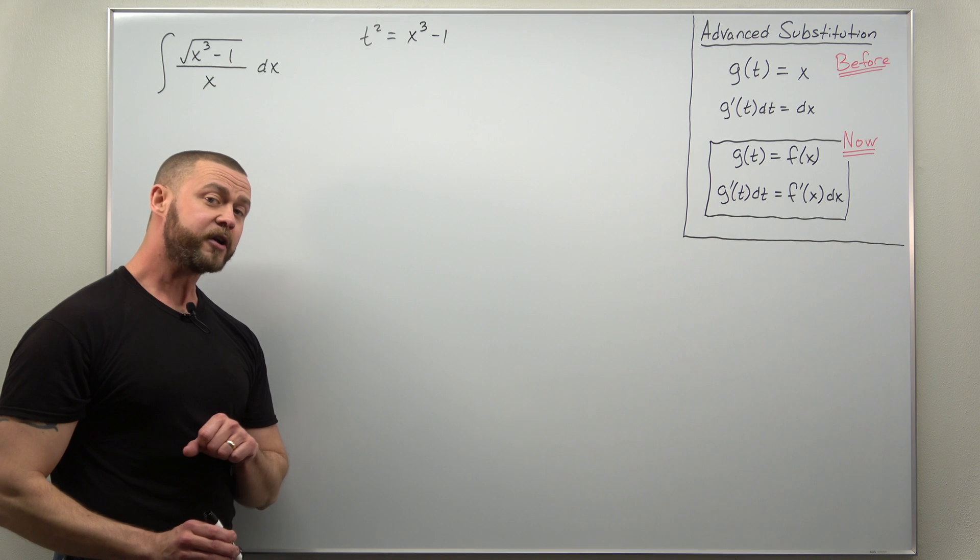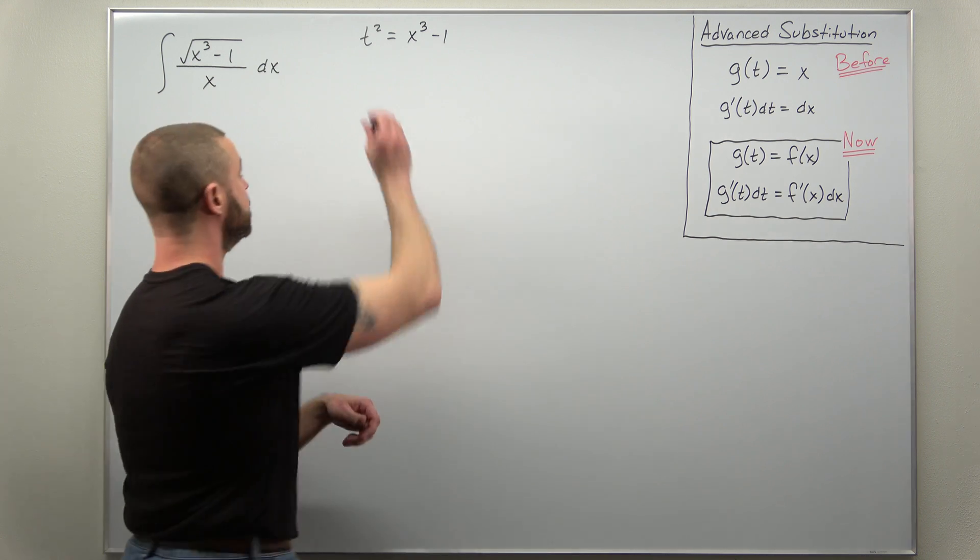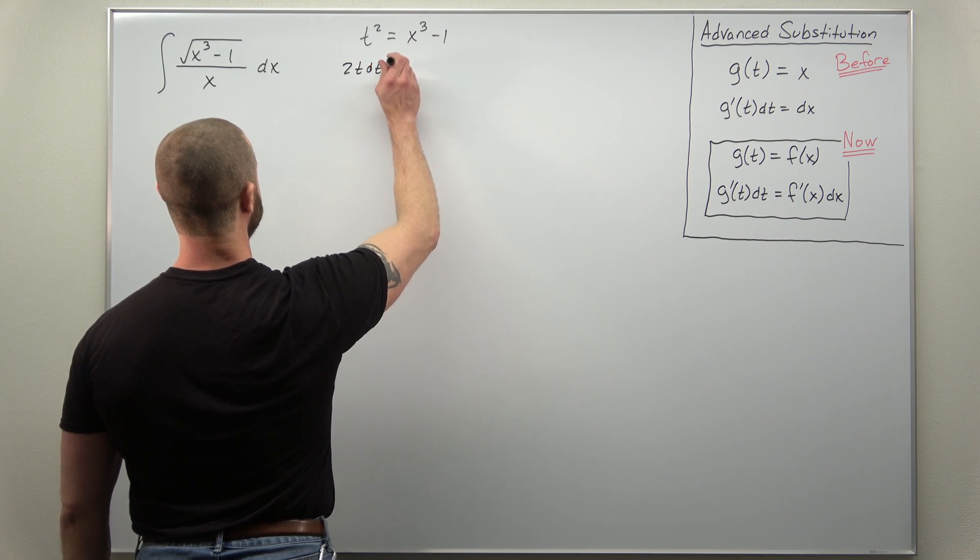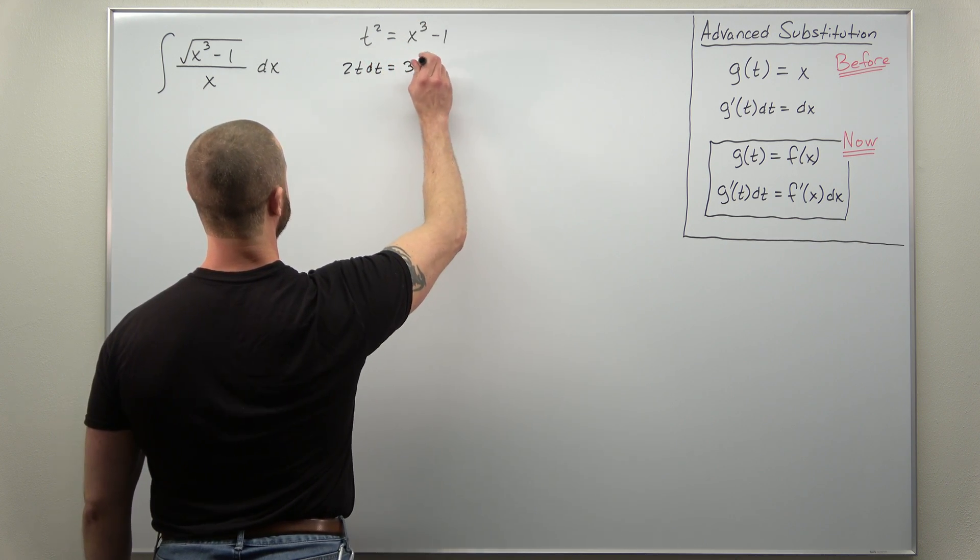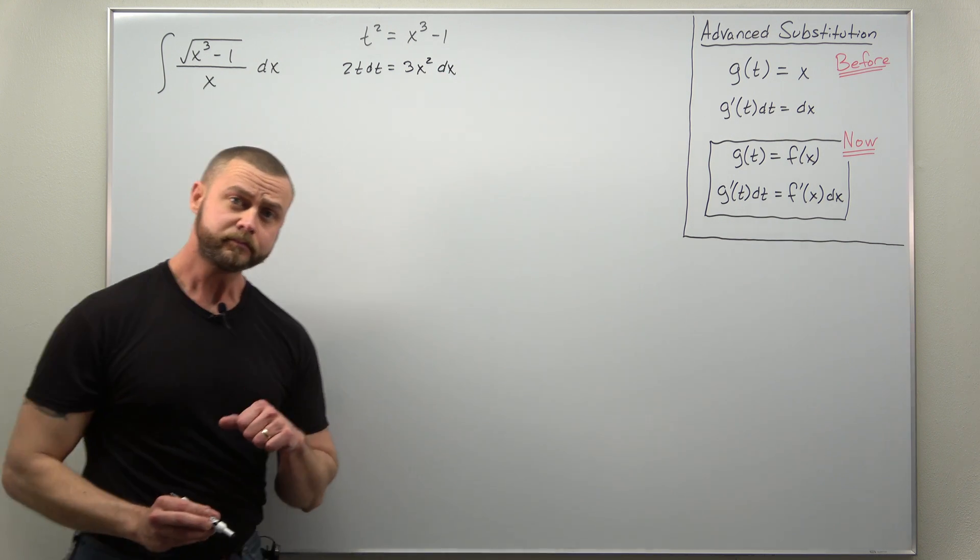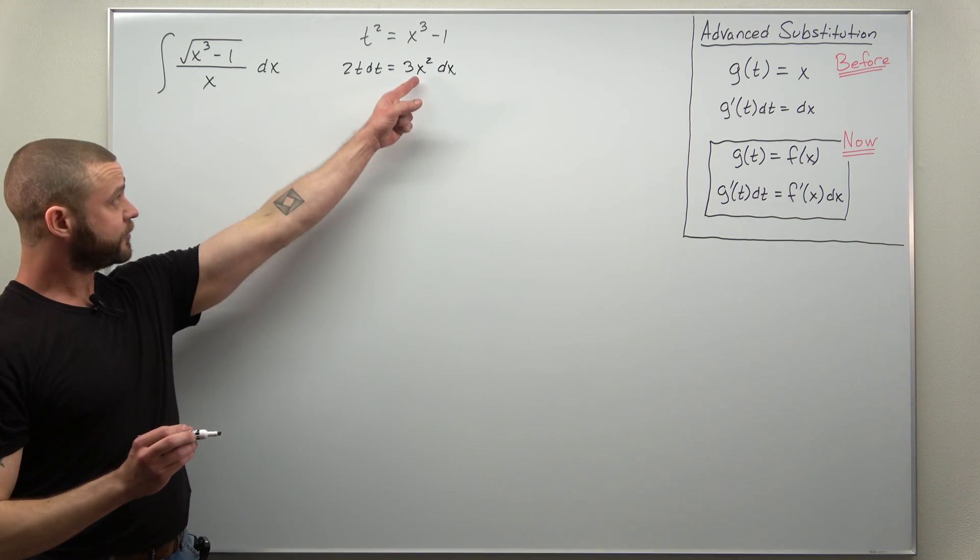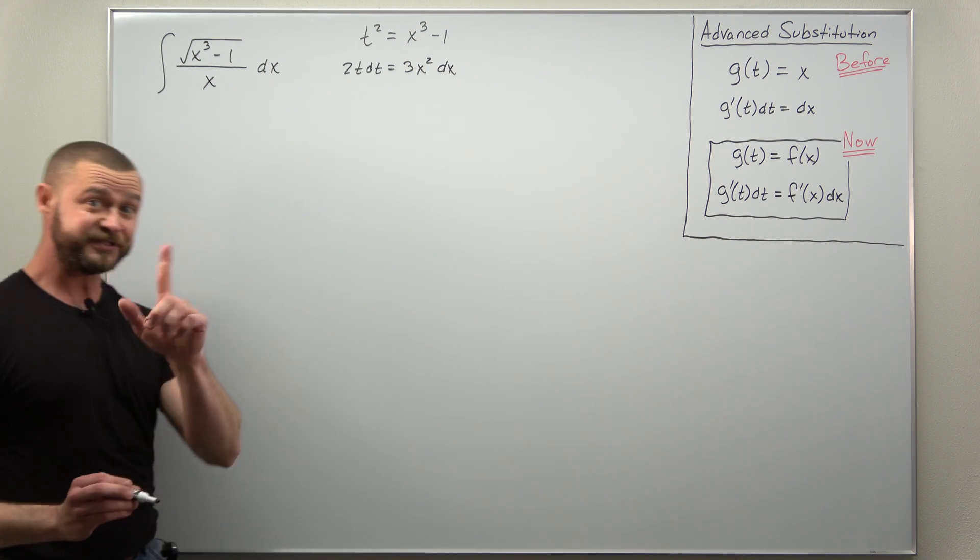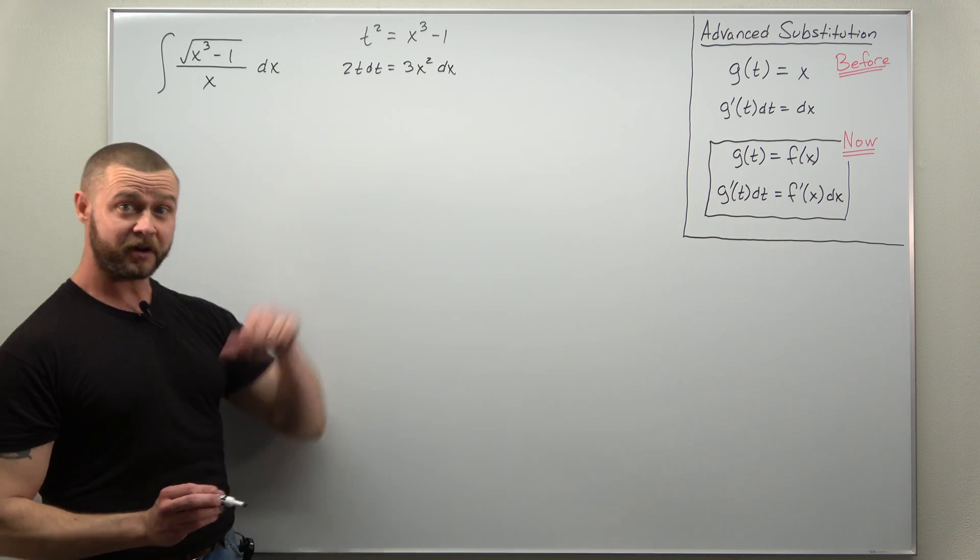All right we're going to calculate the differentials as normal so simple derivatives here we get 2t dt equals 3x squared dx. And from your differentials we seem to be presented with a problem, our integral seems to be missing a factor of x squared.